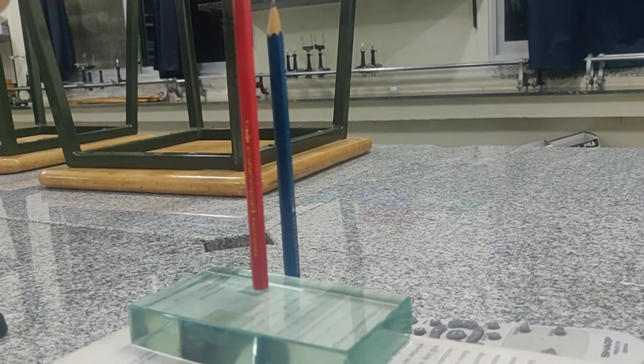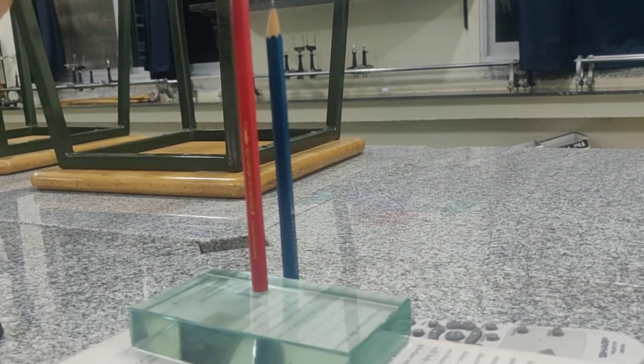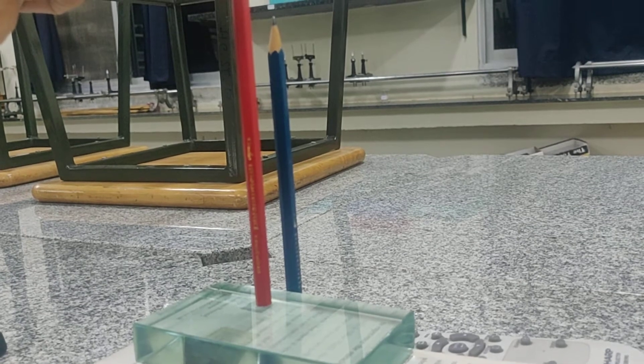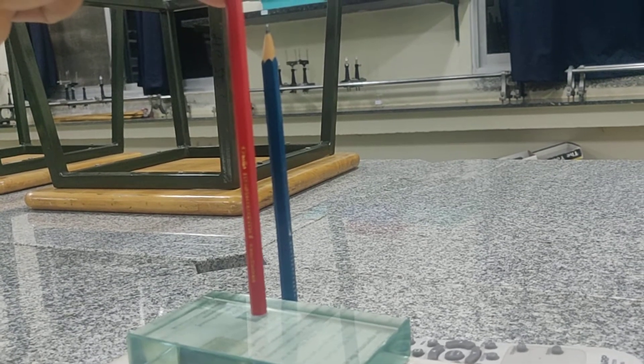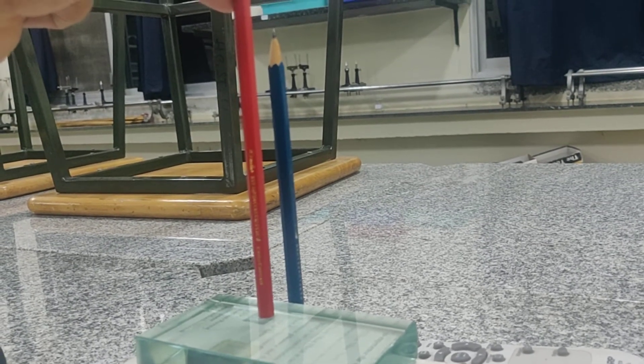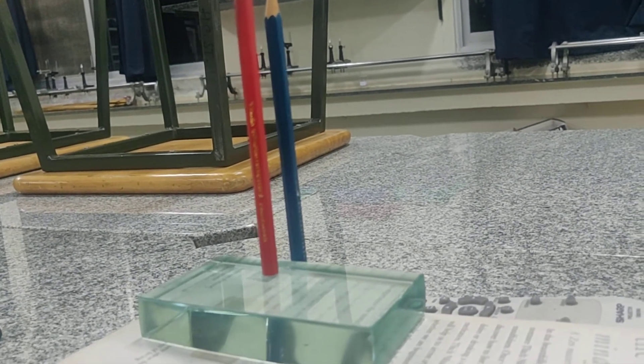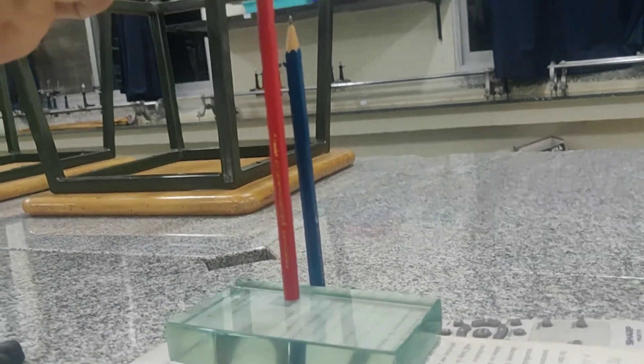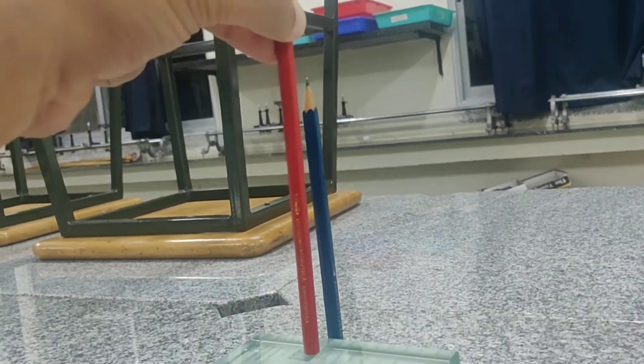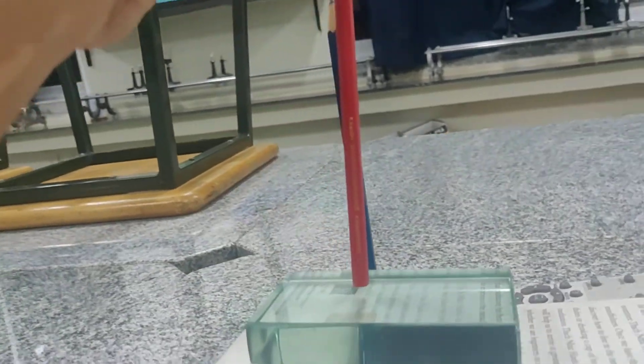This is the experiment to find out where the image of the blue pencil forms when we view it through the glass slab. The place where I am holding the red pencil is where I claim the image is.